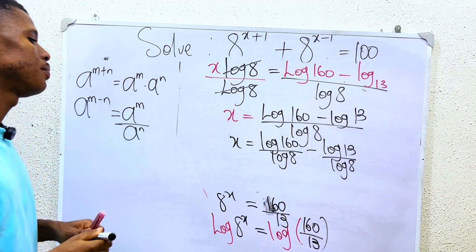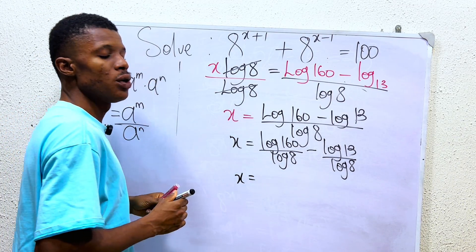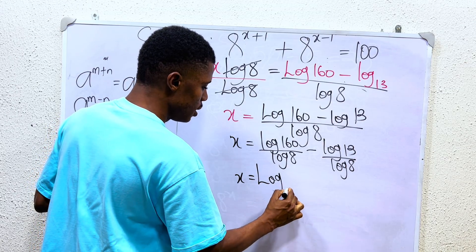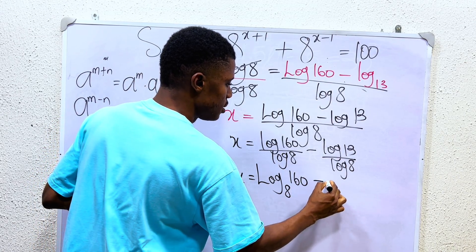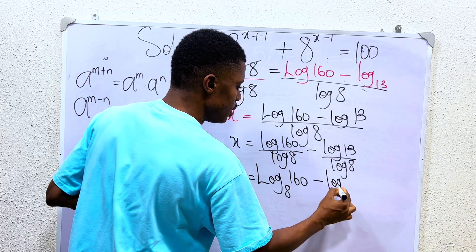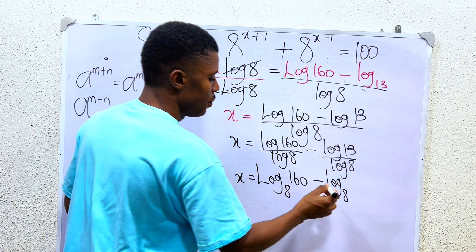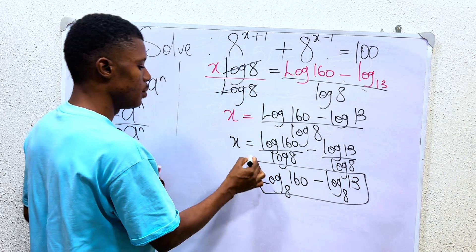Basically, our x can now be seen as x equals, we use change of base at a common log, log base 8 of 160 minus log base 8 of 13. And that's the actual answer to this particular problem.